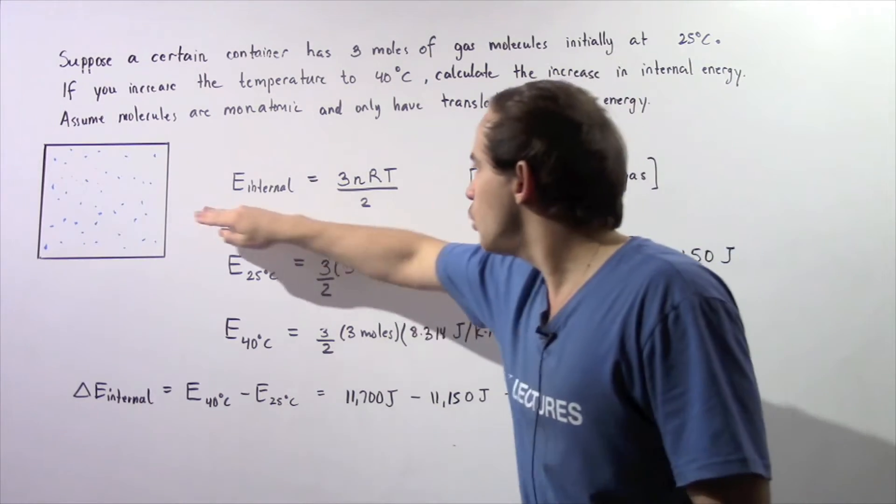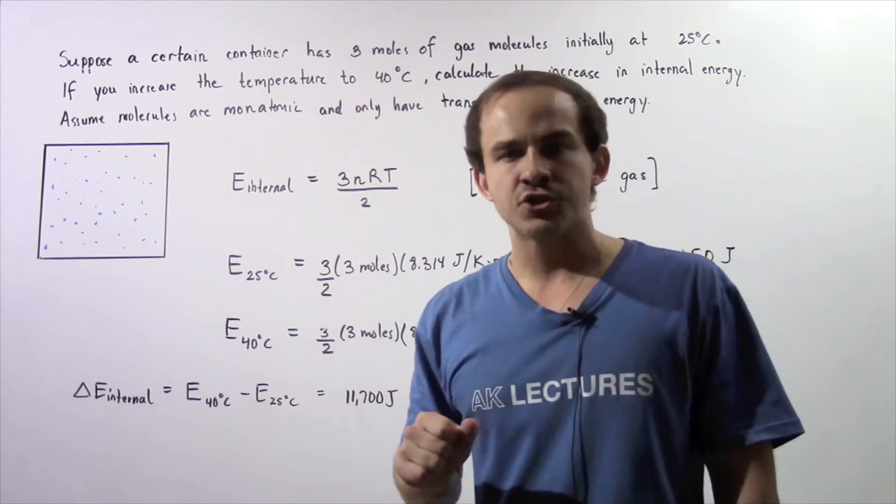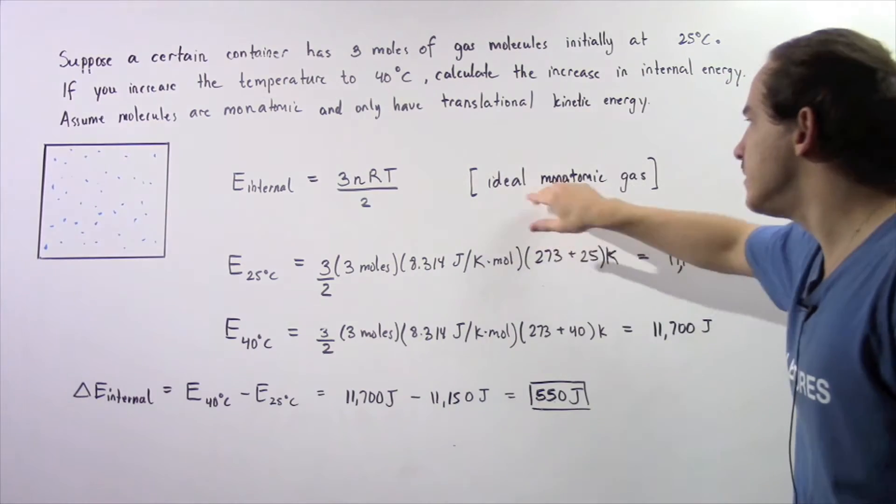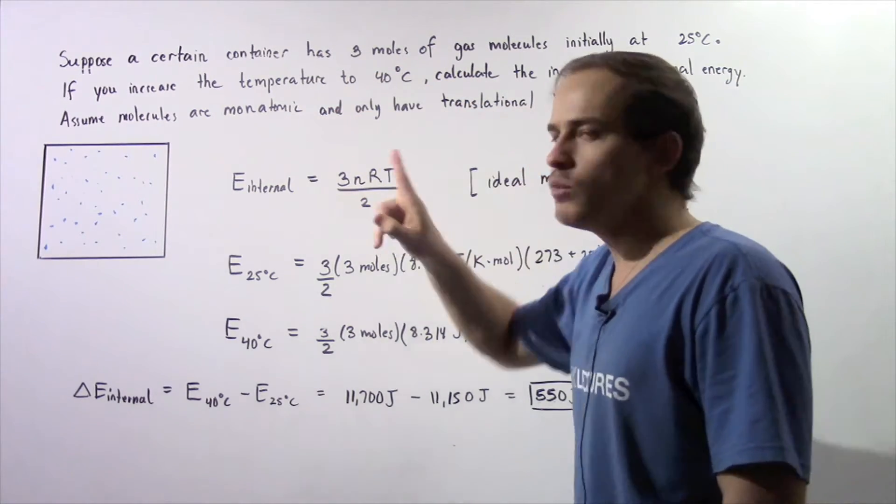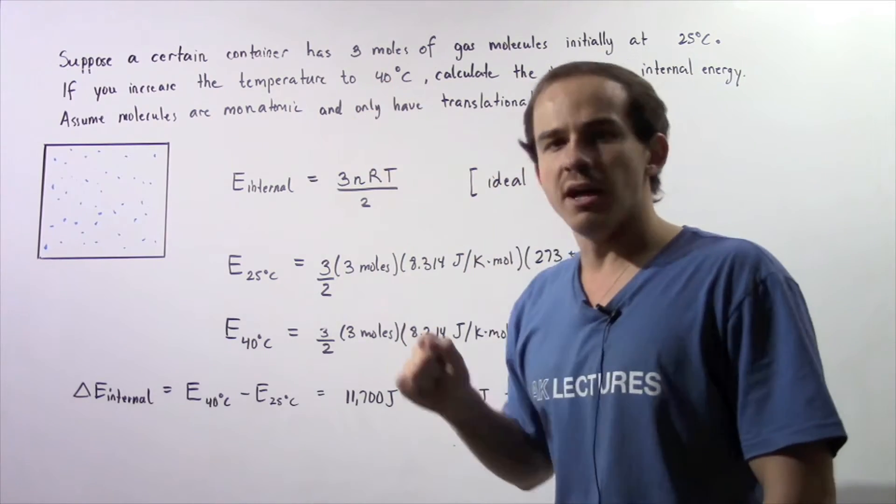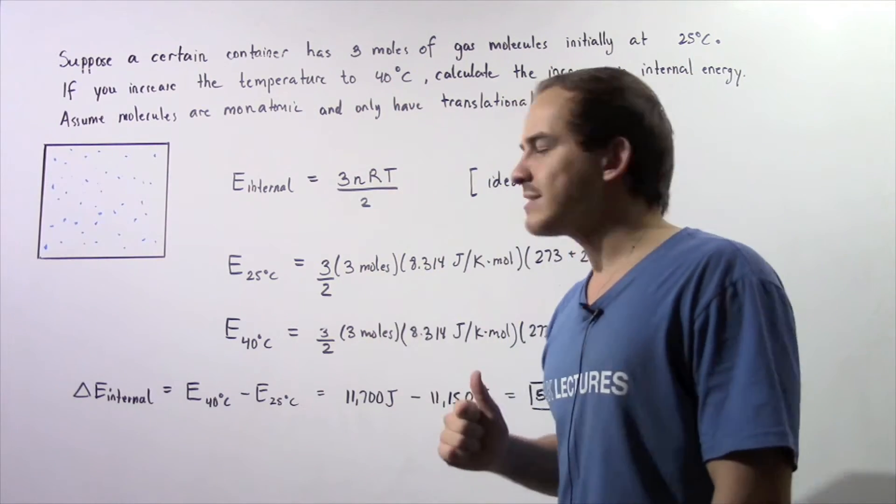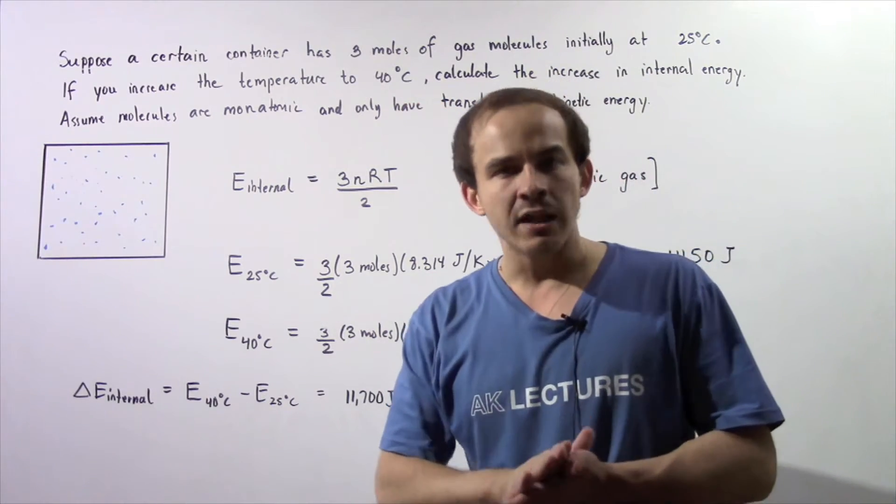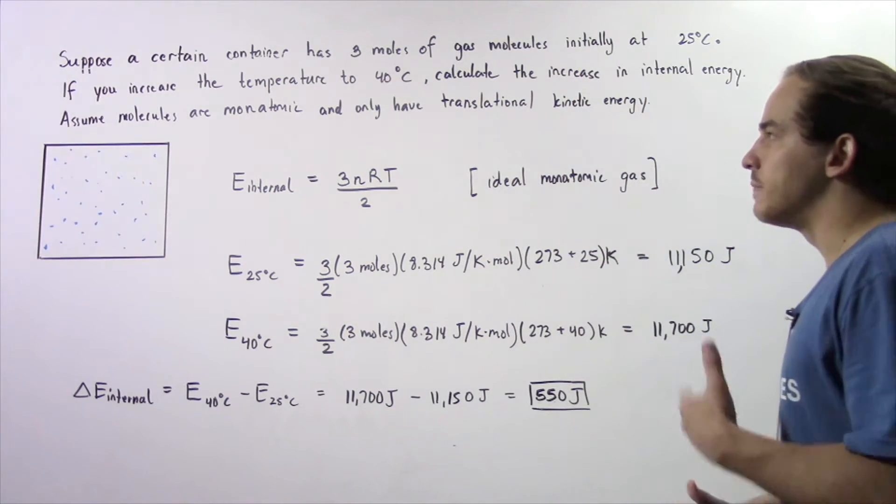That means we can use this equation that we derived in the previous lecture. The internal energy of our ideal monatomic gas is equal to 3/2 multiplied by N, the number of moles, multiplied by R, the universal gas constant, multiplied by T, the temperature given in Kelvins.